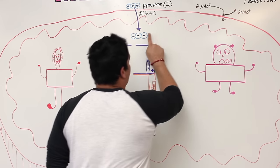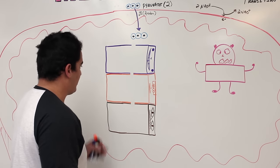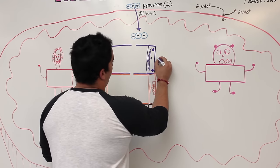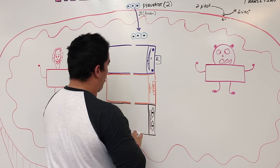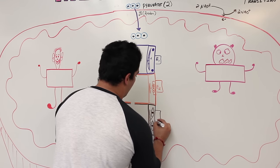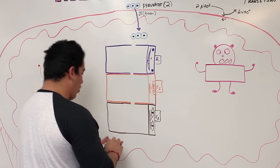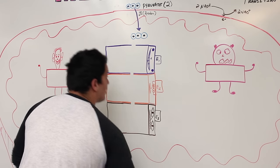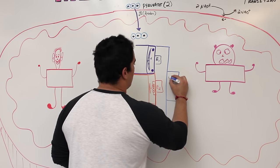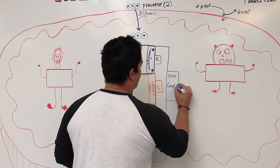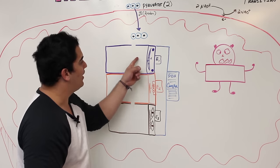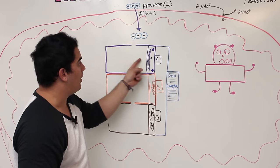If there's oxygen, pyruvate moves into this big enzyme complex. This whole complex is called the pyruvate dehydrogenase complex, and it's made up of three individual enzymes — enzyme one, enzyme two, and enzyme three.